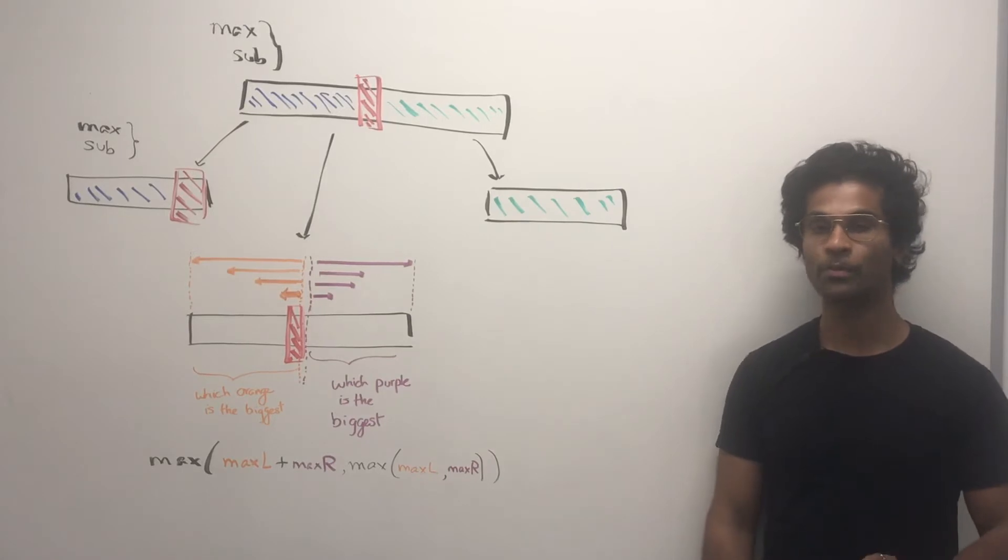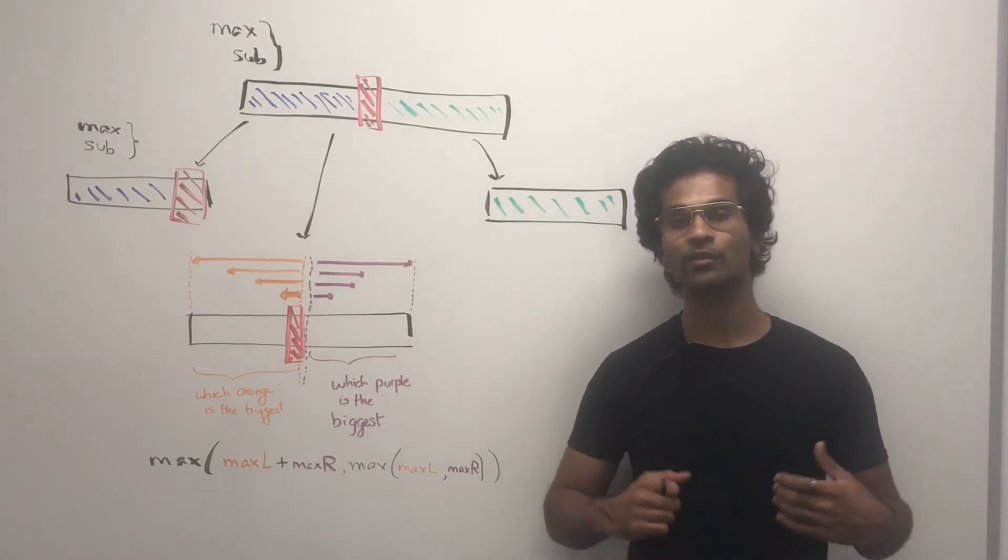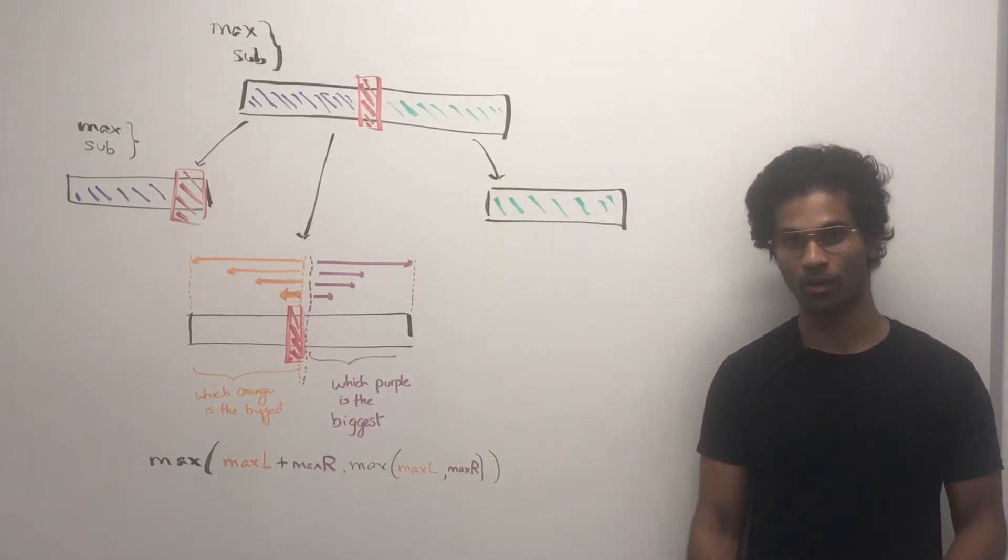Now for the middle, which represents the cross section between the midpoint, because keep in mind when we're doing divide and conquer, we have subproblems, but they are not overlapping like we have in dynamic programming.